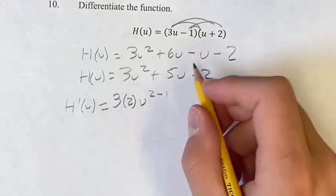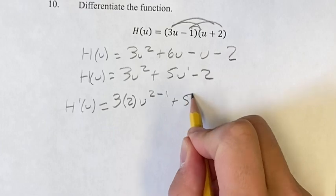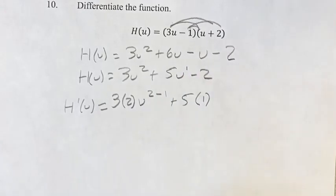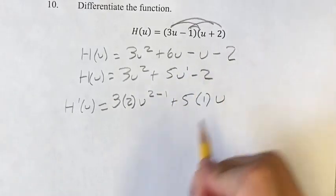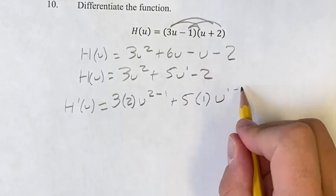Do the same thing here. Think of this as u to the 1. So we have 5, bring the 1 down, multiply it, times u to the 1, and then again we're subtracting 1.